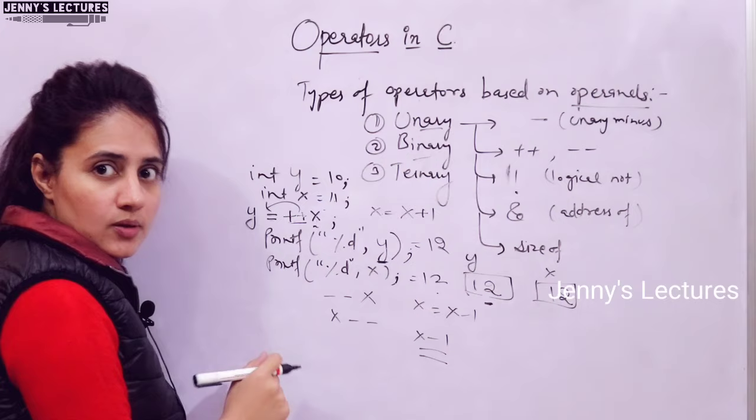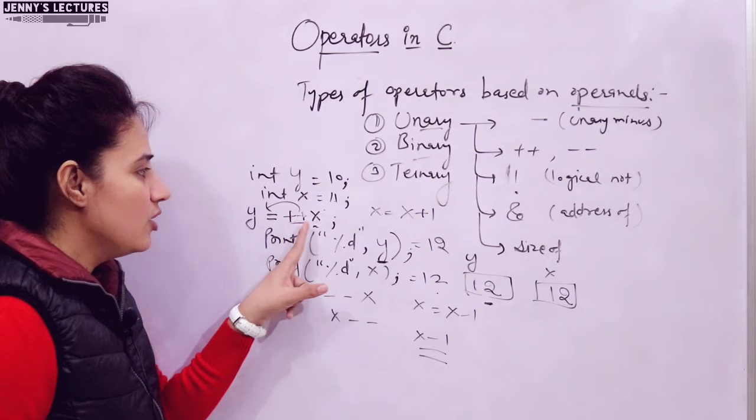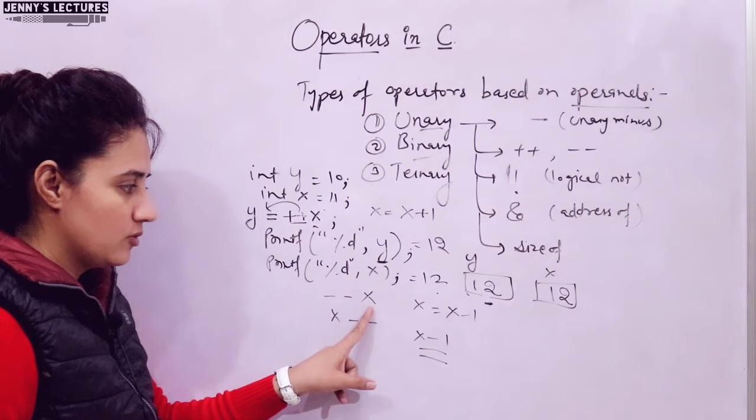We will discuss these operators in detail one by one in separate videos. This is just an overview. The increment and decrement operators take only one operand — that is why they are unary operators.